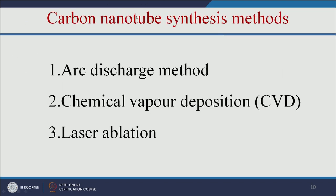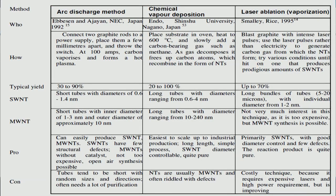There are three approaches available to make carbon nanotubes: arc discharge, chemical vapor deposition, and laser ablation.